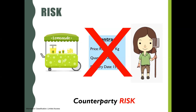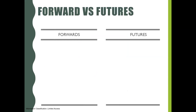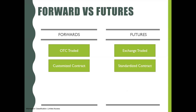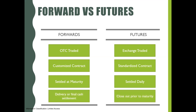To conclude, let's look at the key differences between futures contract and the forwards contract. Forwards are traded over the counter, whereas futures are traded in an exchange. Forwards can be customized, but futures are standardized contracts. Forwards generally get settled at maturity; however, futures get settled daily through the mark-to-market process. Forwards settlement happens as delivery or cash, whereas futures contracts usually close out before maturity.